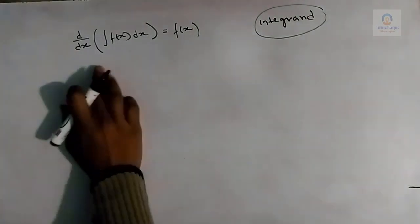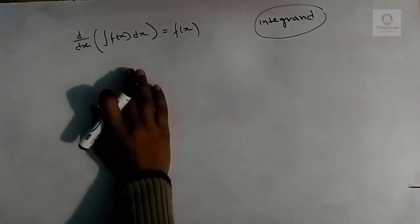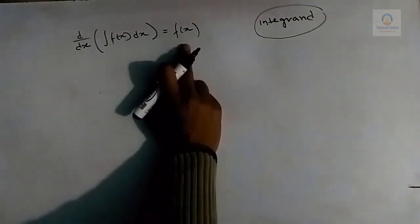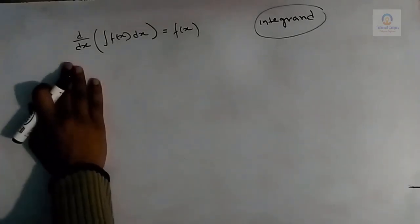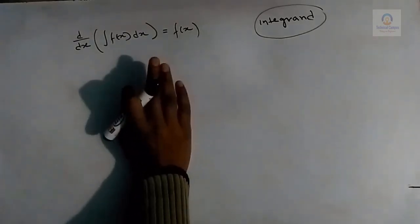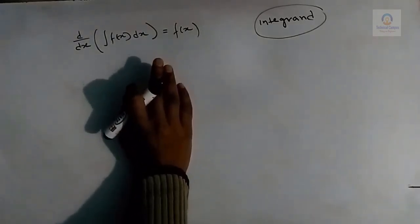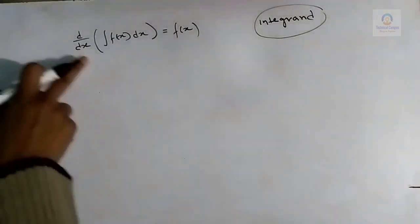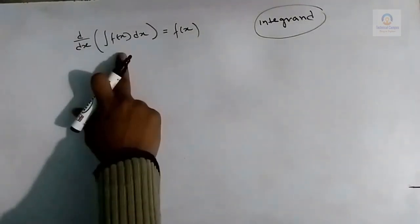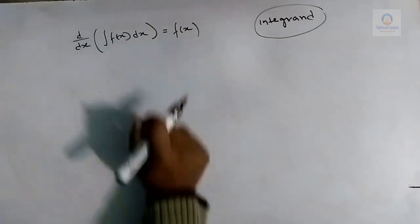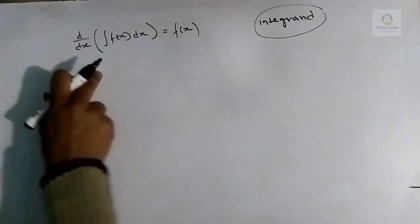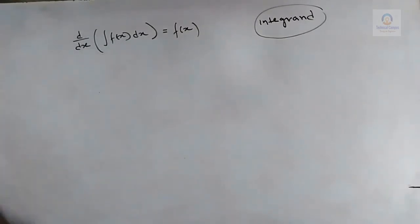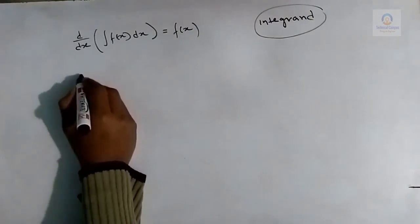Differentiation of an integral is the integrand itself, or we can say differentiation and integration are inverse operations. So if we take the differentiation of the integration of f(x), the result will be f(x) because differentiation and integration are inverse operations.